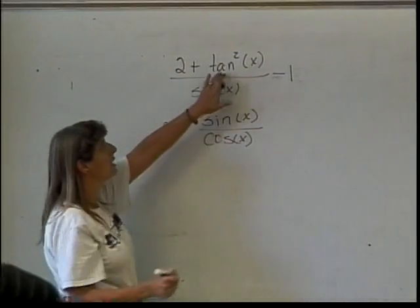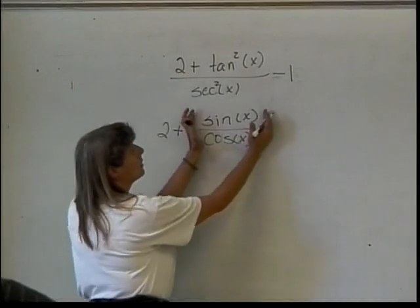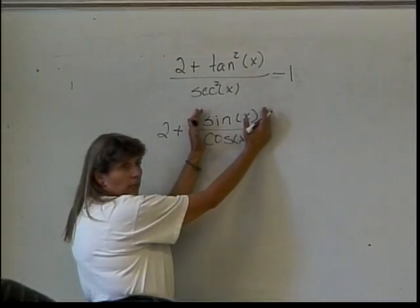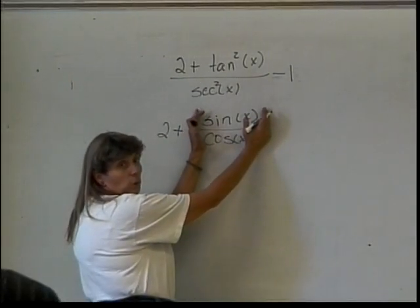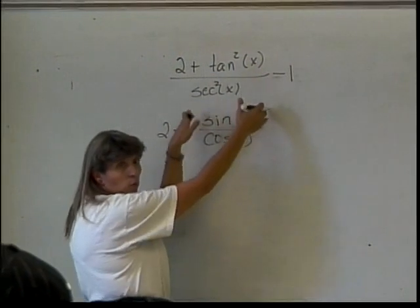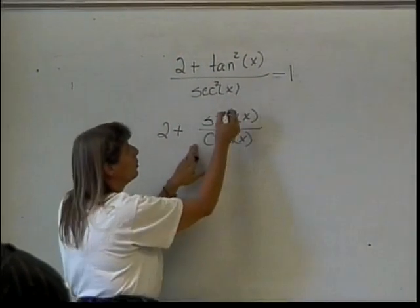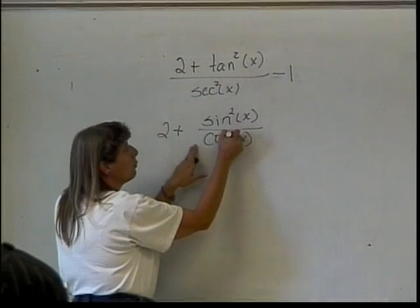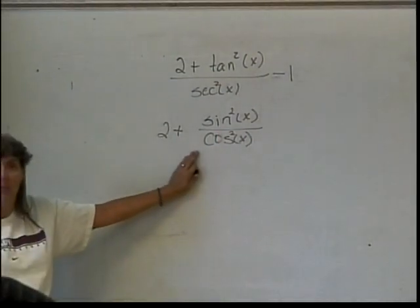Now, this tangent was squared. So, I either have the option of squaring the whole thing, or if I square a fraction, it's the same thing as squaring the numerator and also squaring the denominator. Usually, it's easier if we do it that way in terms of making things simpler.